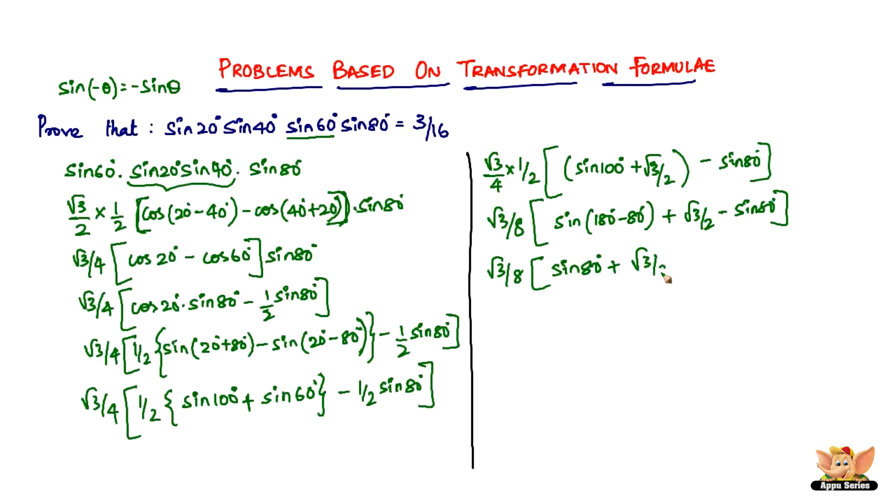Sin 80° plus √3/2 minus sin 80°. So sin 80°, sin 80° gets cancelled, positive and negative sin 80° gets cancelled, and all we are left with is √3/8 into √3/2. √3 into √3 equals 3, 8 into 2 is 16. So therefore we've got 3/16.